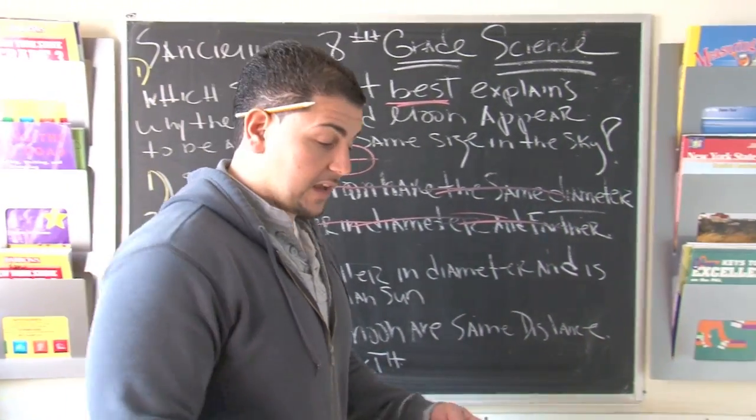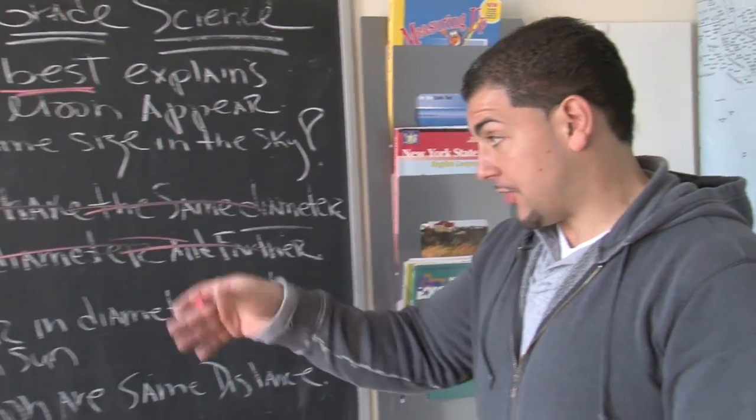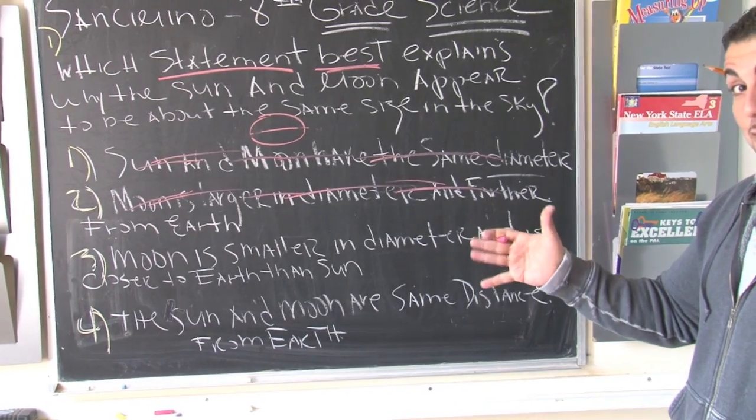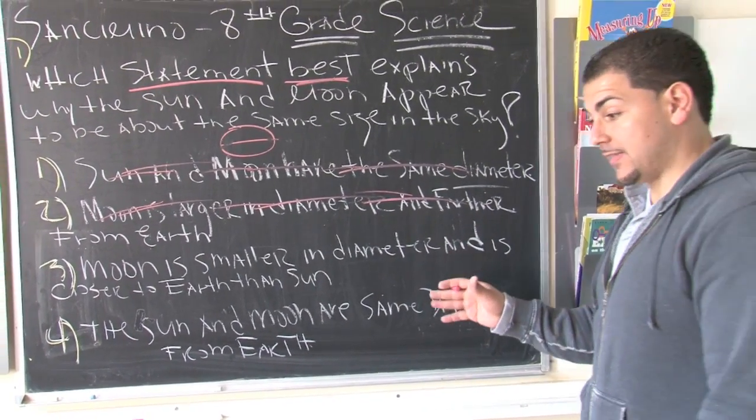Well, you need to know a little couple of things about common sense. Common sense says that the sun is much larger than the moon. So let's keep that focused. Number three says the moon is smaller in diameter, sounds pretty good, right?